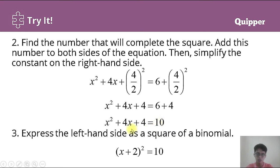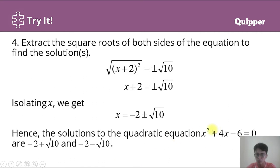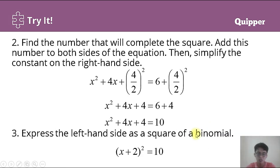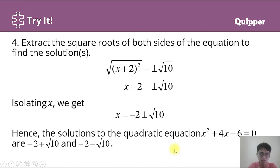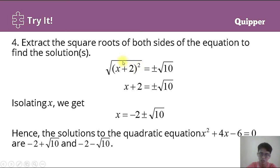Now we express the left-hand side as a square of a binomial: (x + 2)² = 10. To find the value of x, we extract the square roots of both sides: √(x + 2)² = ±√10, and we can cancel the square and the square root.